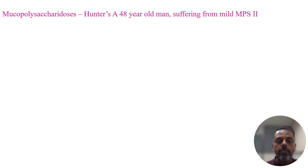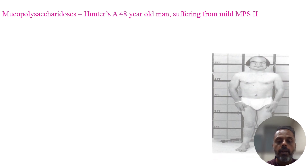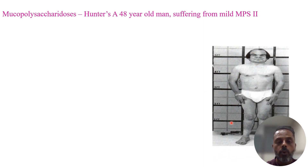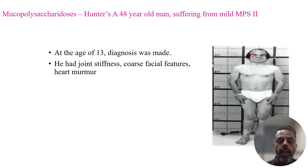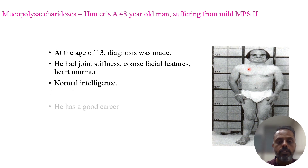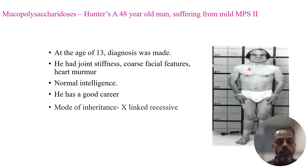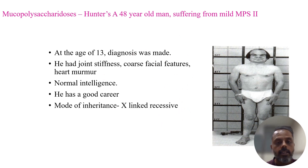This is another picture related to Hunter's syndrome, diagnosed in a 48-year-old man with normal IQ. The diagnosis was made at age 13. You can observe coarse facial features, joint stiffness, and heart murmurs, but he has normal intelligence and a good career. The mode of inheritance for Hunter's syndrome is X-linked recessive disease.